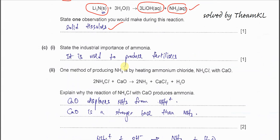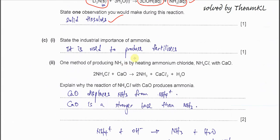Part C(i): State the industrial importance of ammonia. Just remember ammonia or the ammonium related compounds are always used as fertilizer.